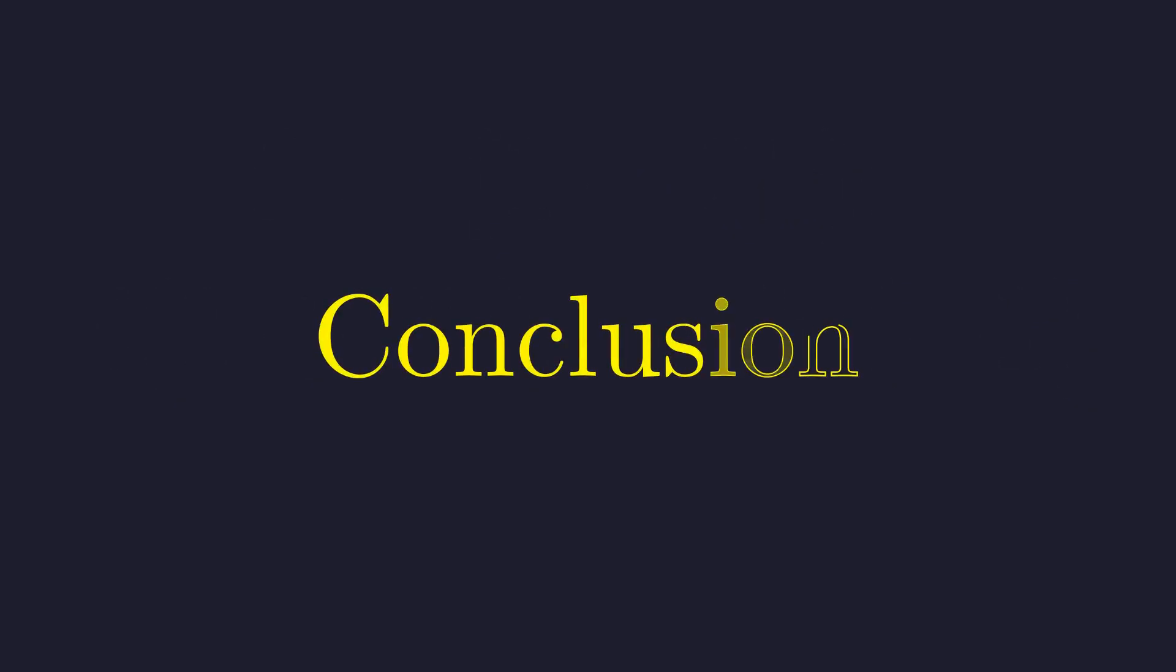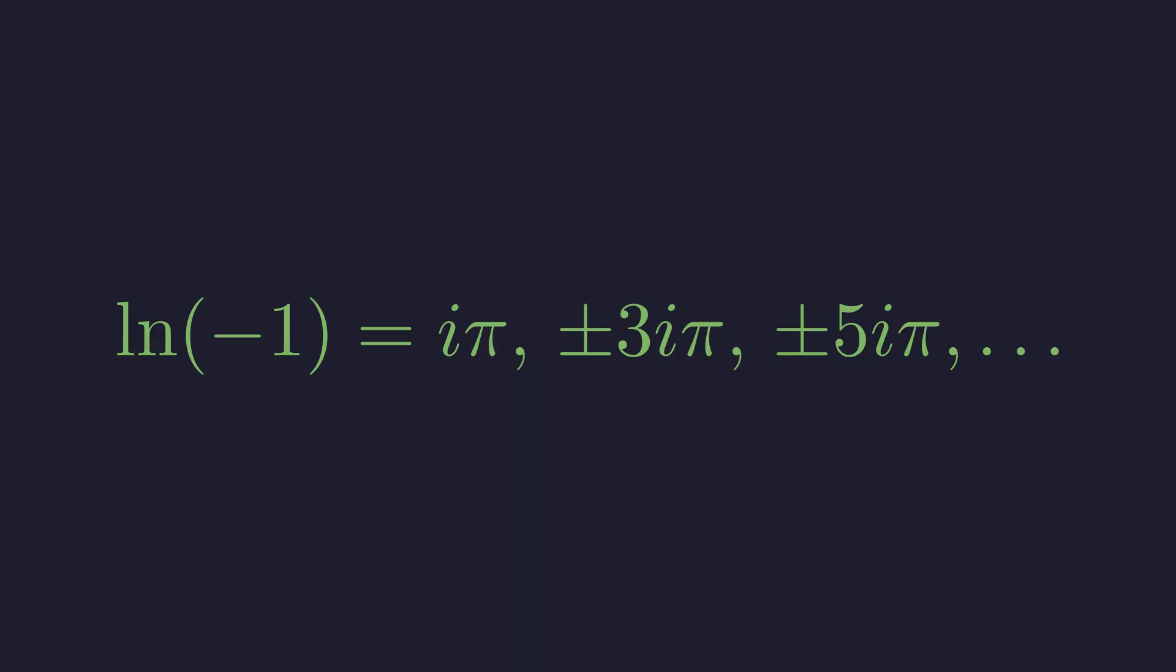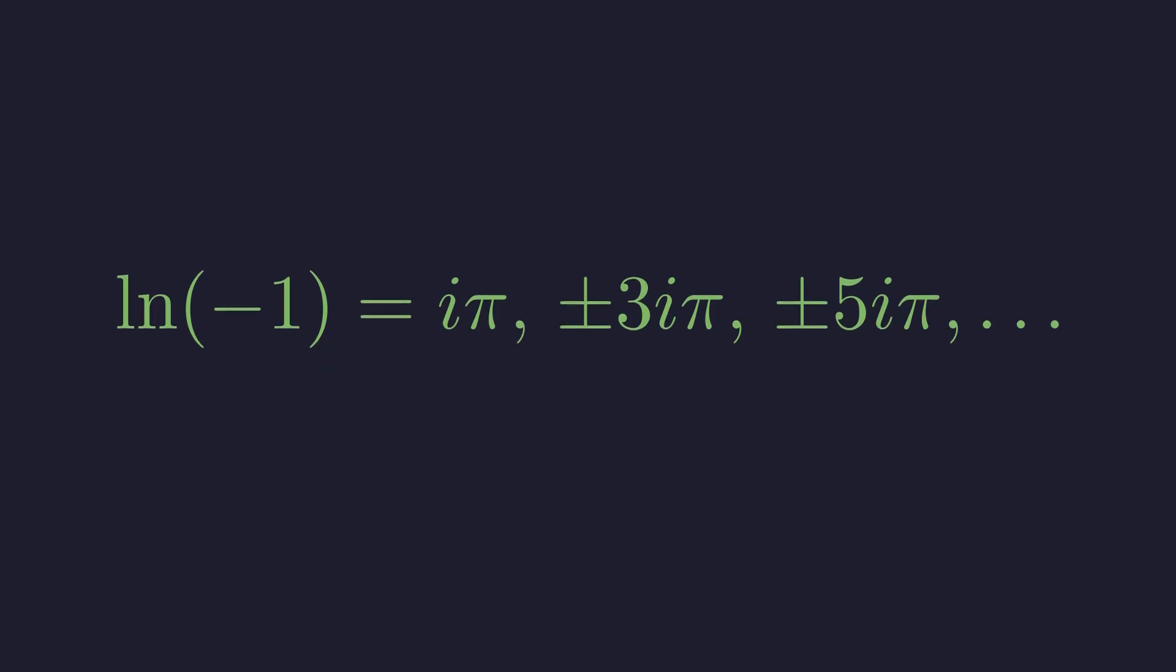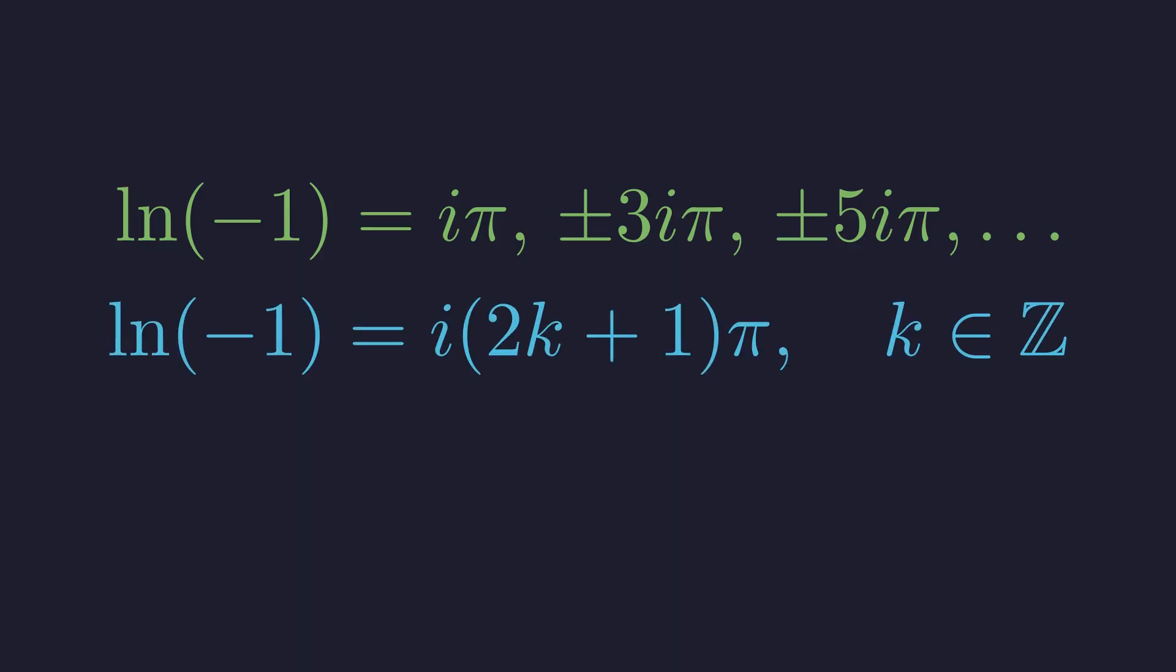So, let's recap our discovery. The question, what is the natural log of negative 1, has a beautiful and surprisingly rich answer in the complex plane. It has a principal value of i pi, but also an infinite family of other solutions. A question that seems impossible in one domain finds its complete and elegant solution in another. This is a perfect example of the power and beauty of complex numbers.